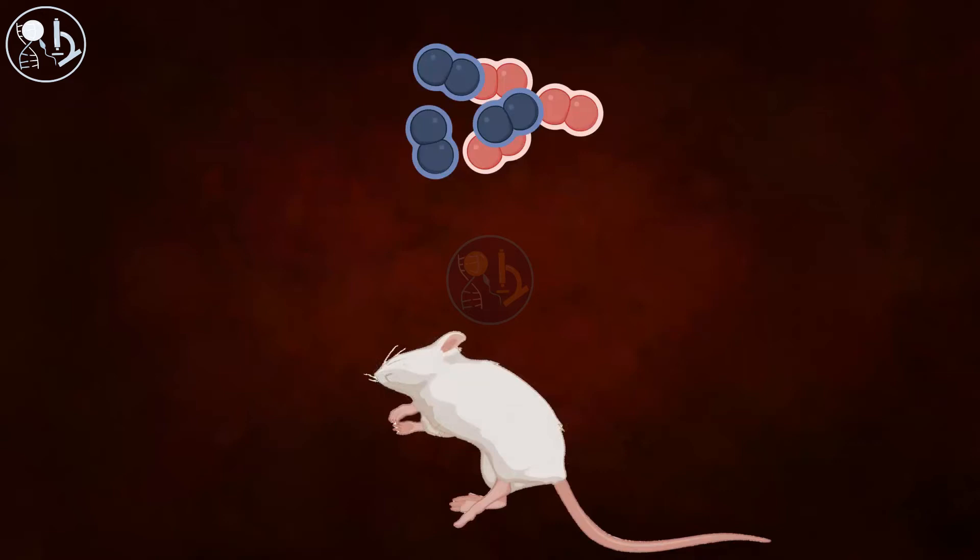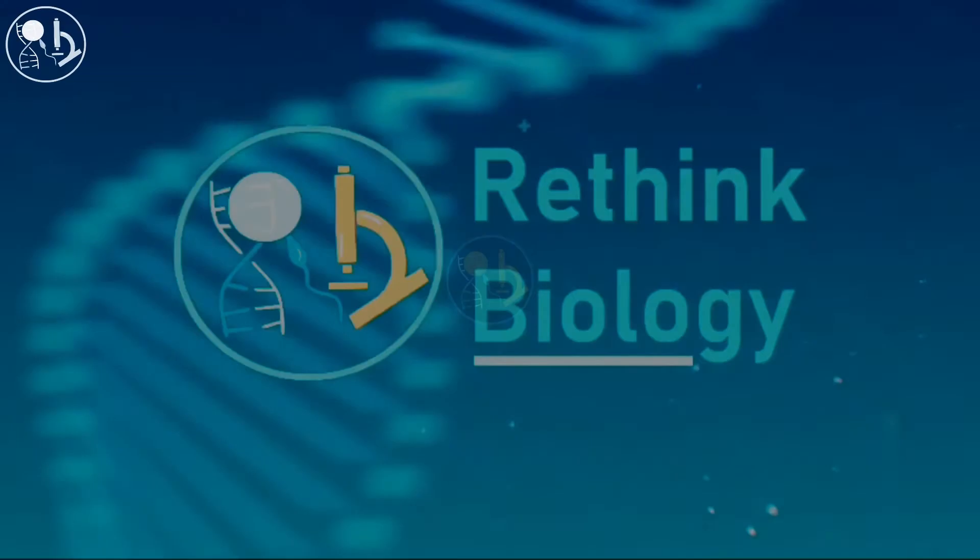Griffith came to know that some component of the heat killed 3S was responsible for transformation of 2R into a virulent one. However, he didn't know which component it was, so he named this responsible component as transforming principle.